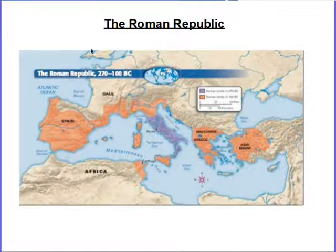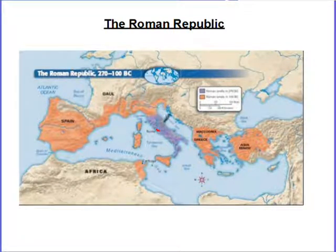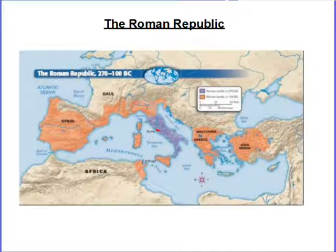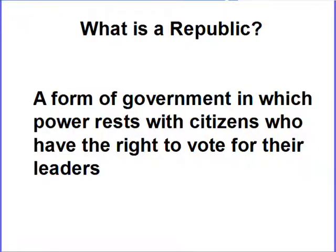Looking at this map, we can see Rome located centrally in Italy, right on the Mediterranean Sea. At this point Rome had really developed significantly between 270 and 100 BCE, and they would end up controlling a huge chunk of territory. So what does republic mean? A republic is a form of government in which power rests with citizens who have the right to vote for their leaders.